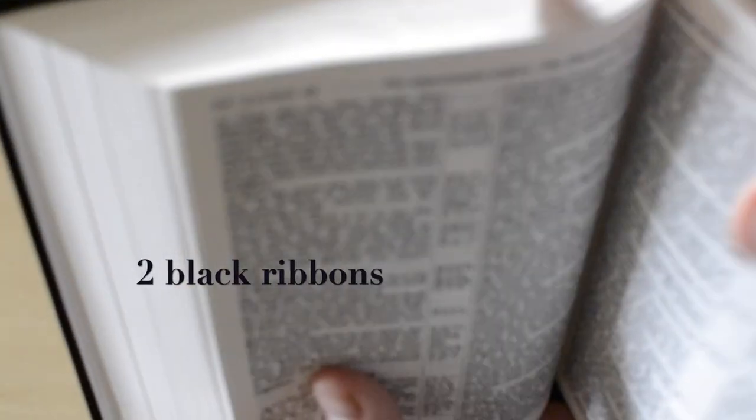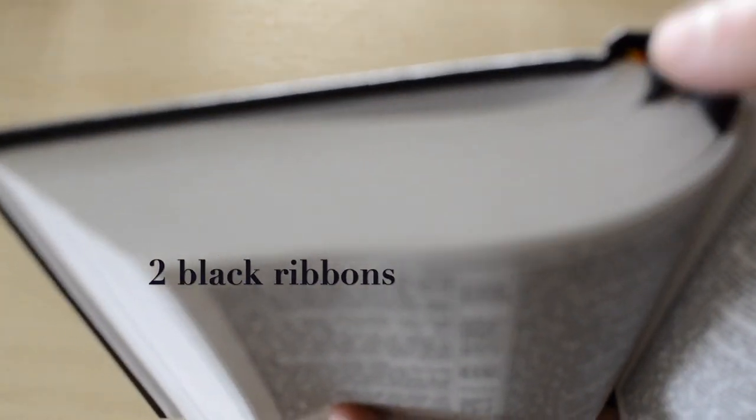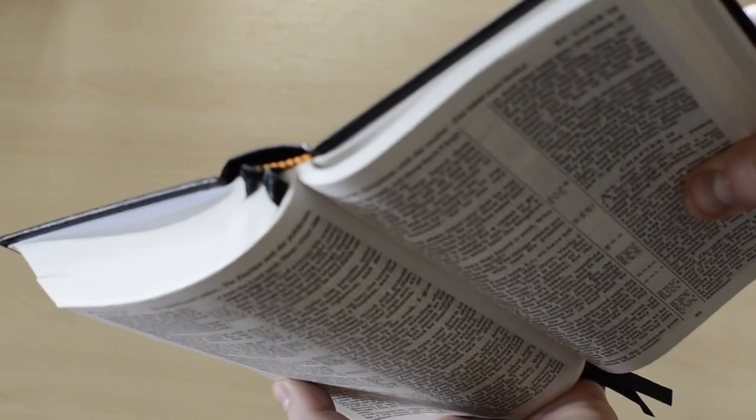It comes with two ribbons, black color, and it has head and tailbands in red, and red and yellow. There you go, the color.